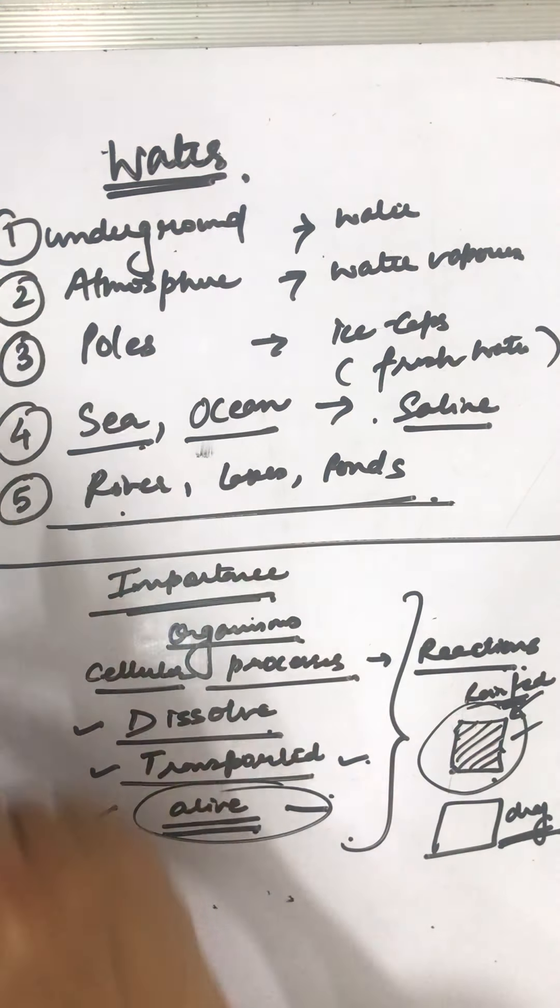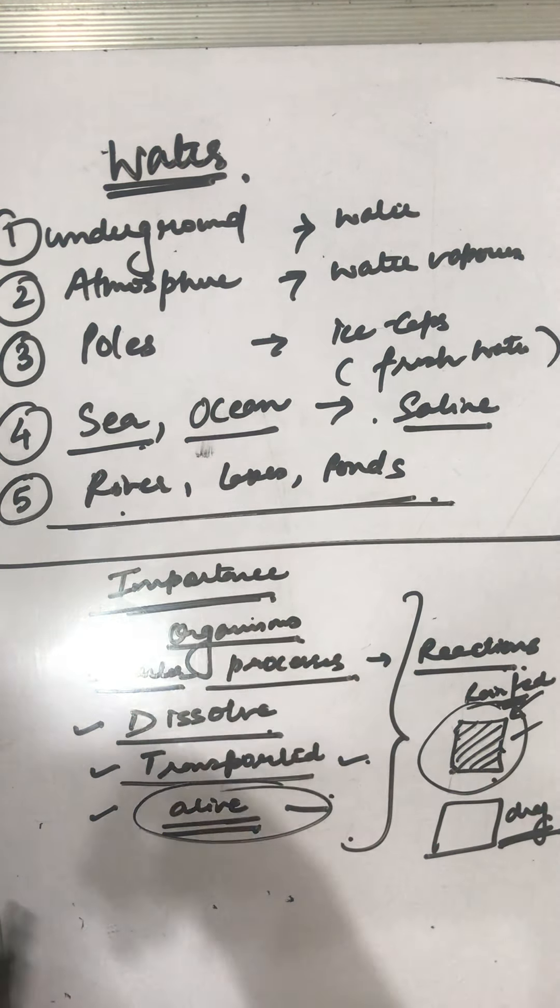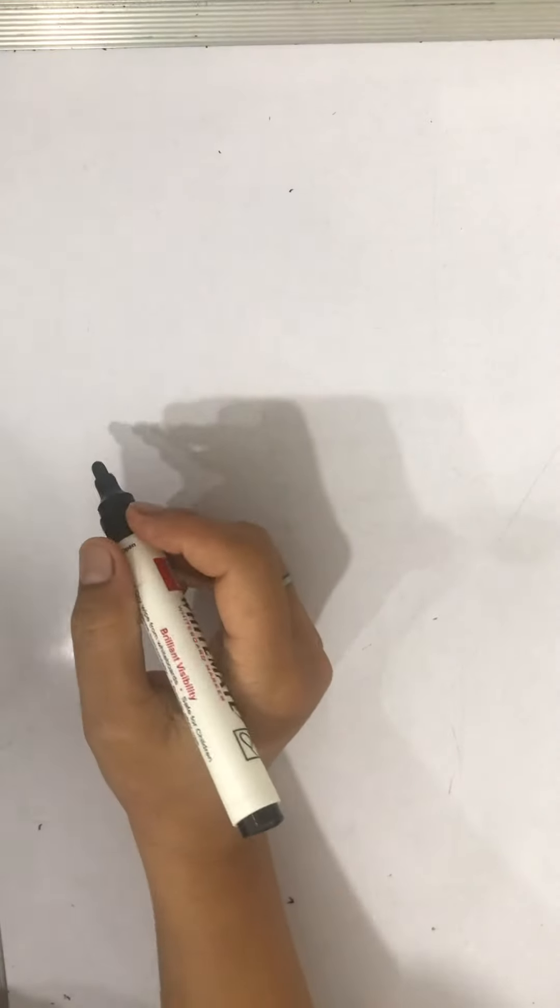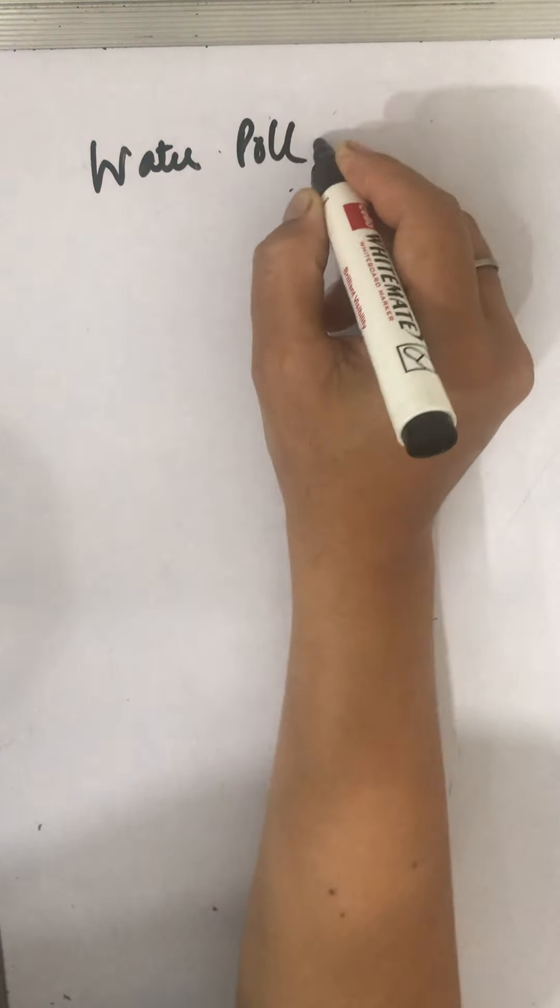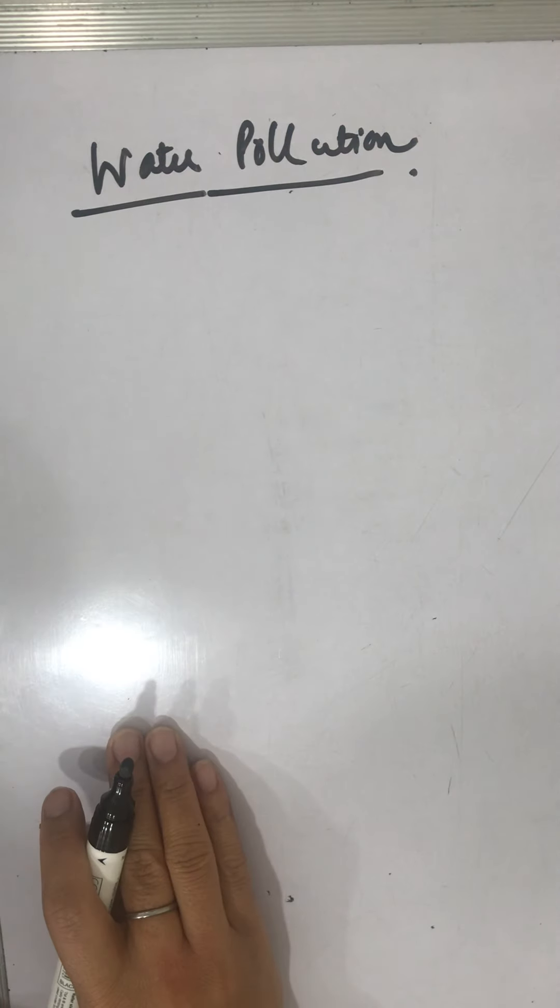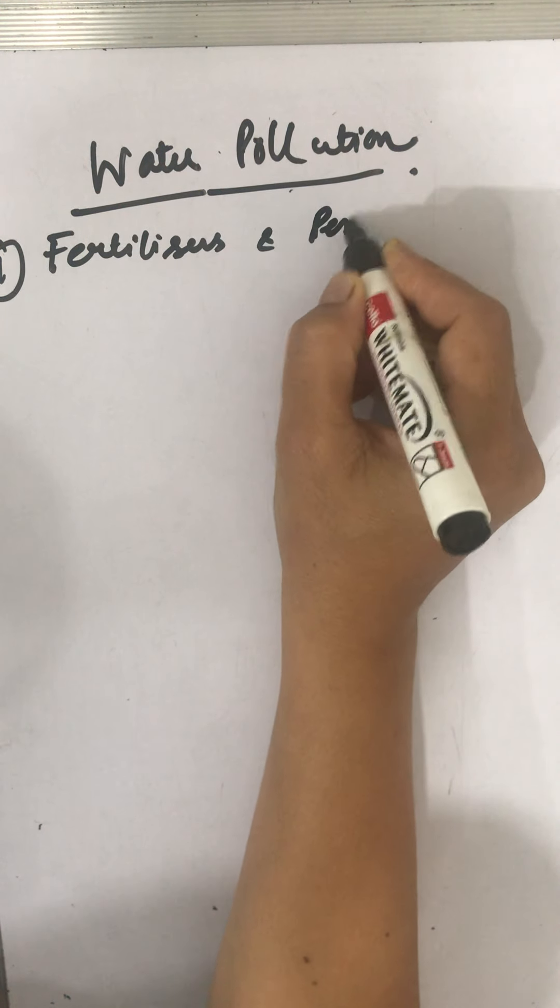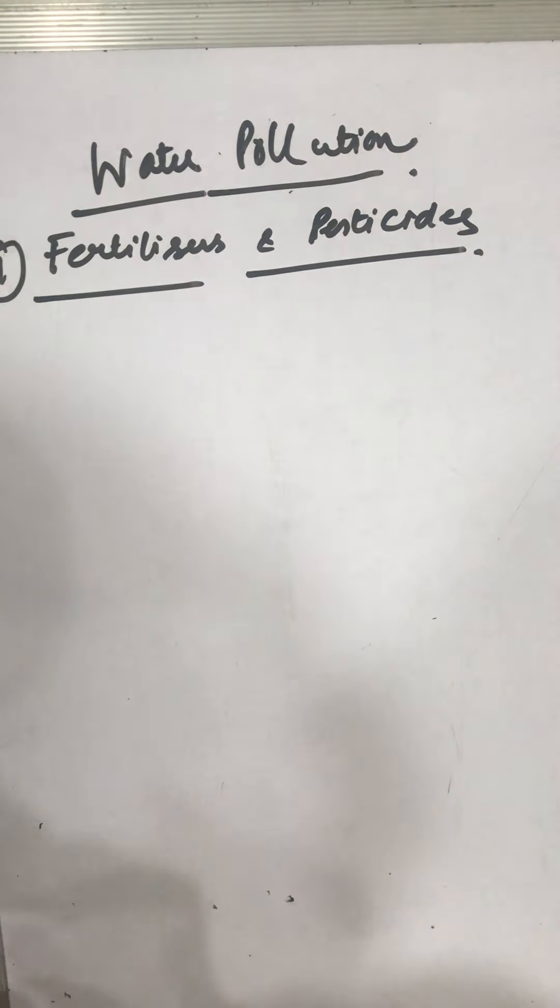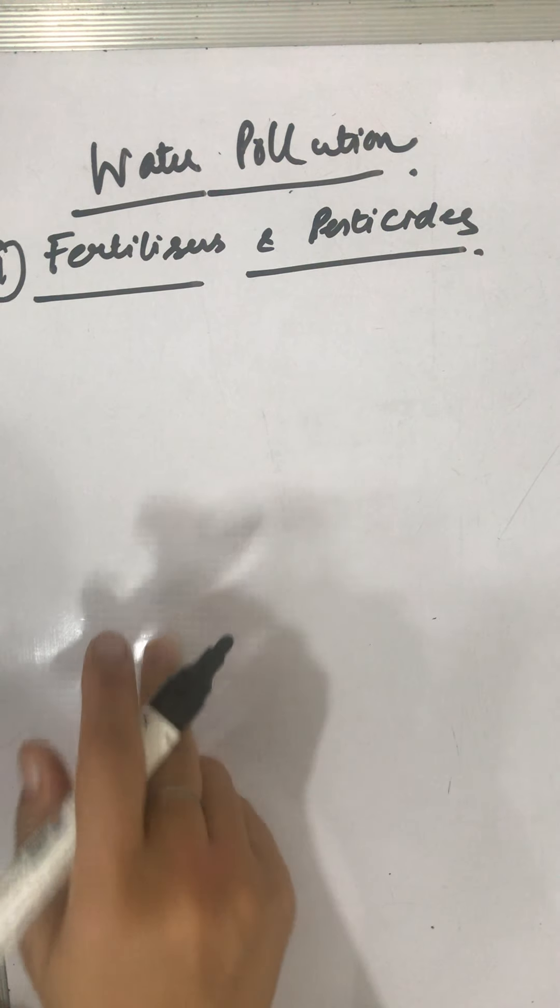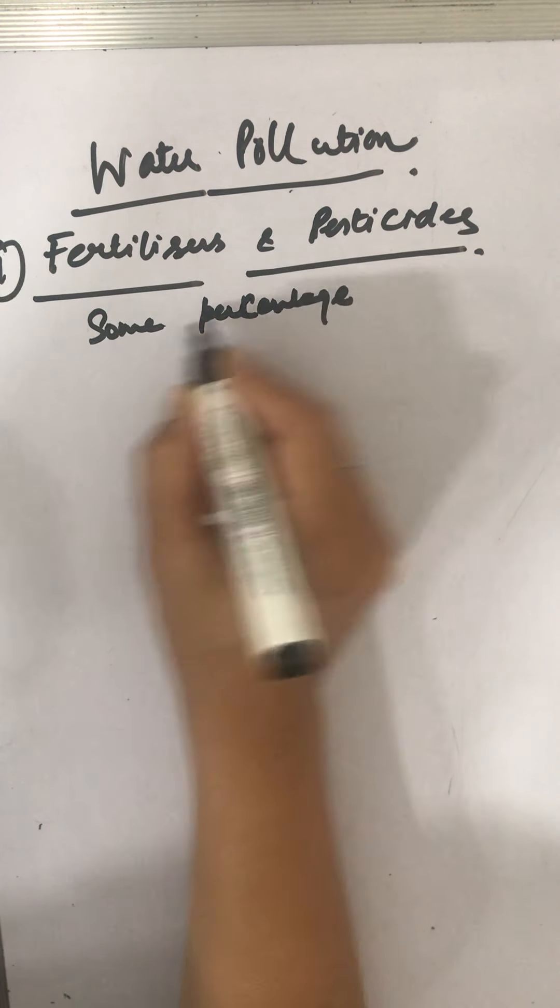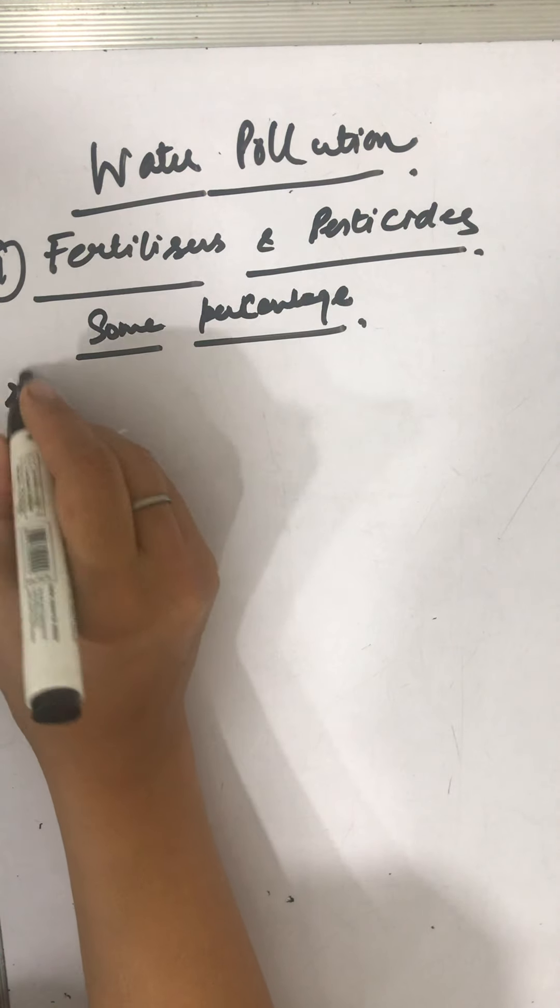Now we come to the topic: if water is available, there will be pollution also. Like if air is there, there is air pollution. Same way, wherever there is water, there is water pollution. What kind of water pollution are we talking about? We are talking about dissolved pesticides, insecticides, chemicals, and other agents. The first point is fertilizers and pesticides which are dissolved in water, used in our farms. Some percentage of that is washed into the water always.